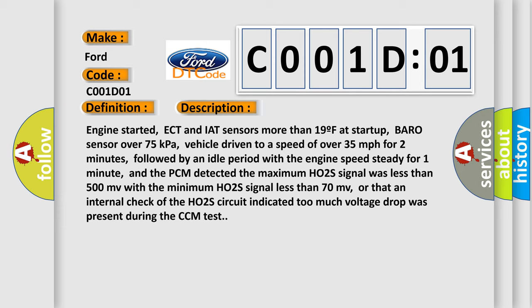Engine started, ECT and IAT sensors more than 19F at startup, baro sensor over 75 kilopascals, vehicle driven to a speed of over 35 miles per hour for two minutes, followed by an idle period with the engine speed steady for one minute, and the PCM detected the maximum HO2S signal was less than 500 MV with the minimum HO2S signal less than 70 MV, or that an internal check of the HO2S circuit indicated too much voltage drop was present during the CCM test.